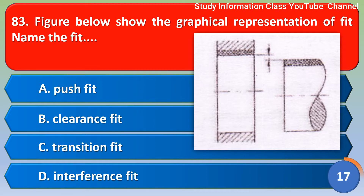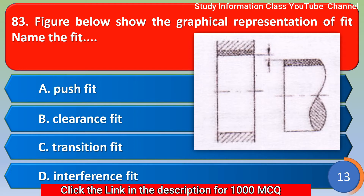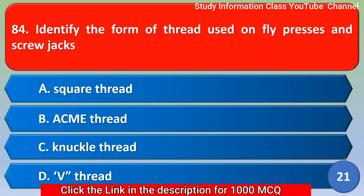Next question: The figure below shows the graphical representation of a fit. Name the fit — option A: push fit, option B: clearance fit, option C: transition fit, option D: interference fit. The correct answer is option B, clearance fit.